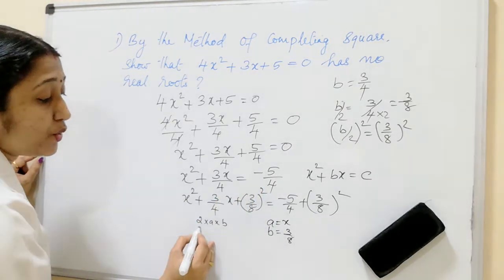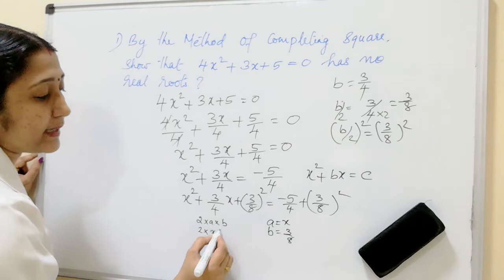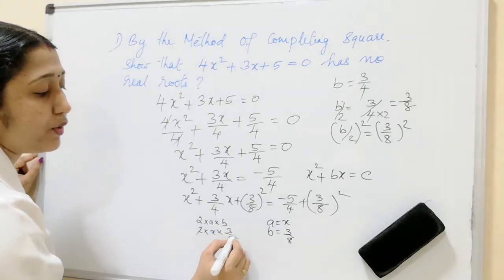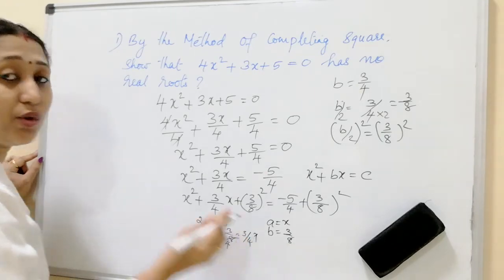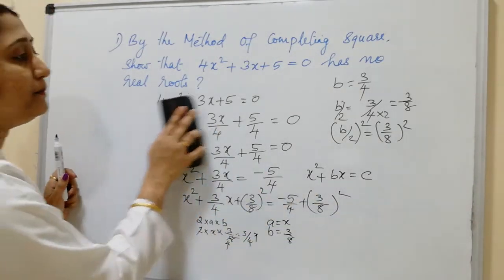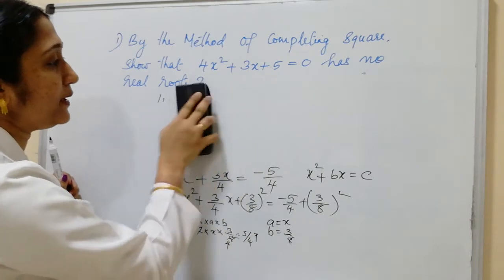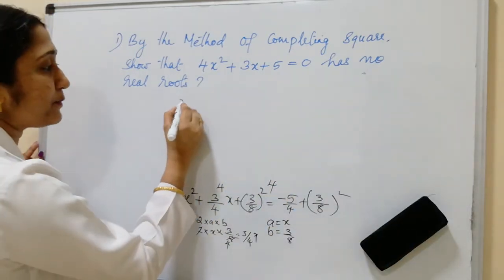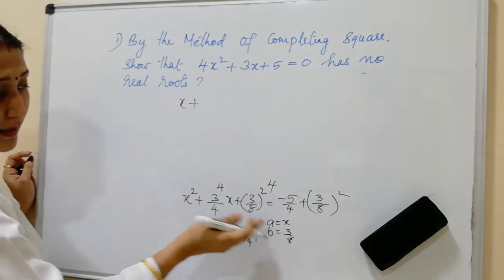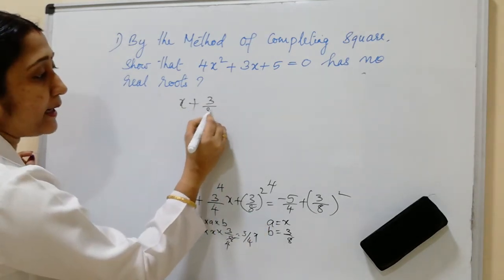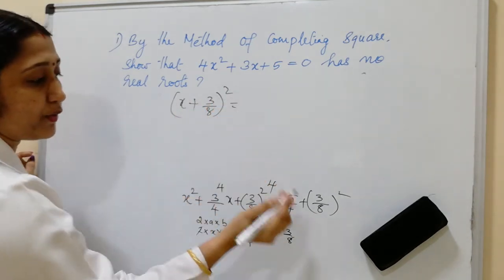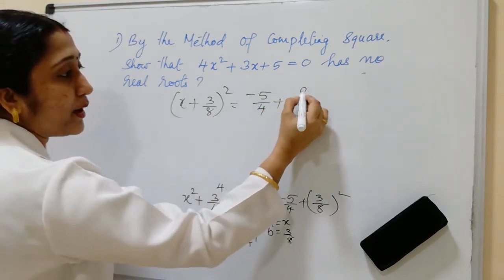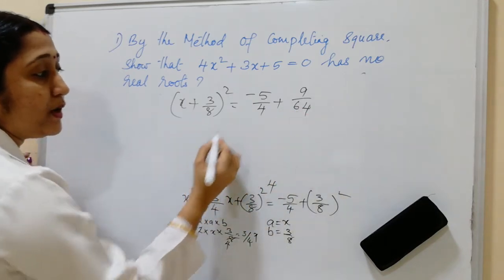We verify: 2AB = 2 × x × 3/8 = 6x/8 = 3x/4, which matches. So the left side becomes (x + 3/8)², and the equation is (x + 3/8)² = −5/4 + (3/8)² = −5/4 + 9/64.